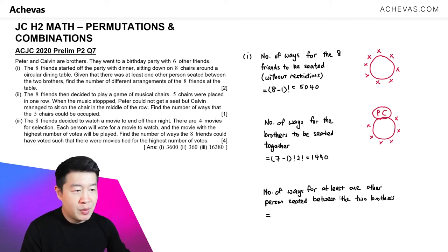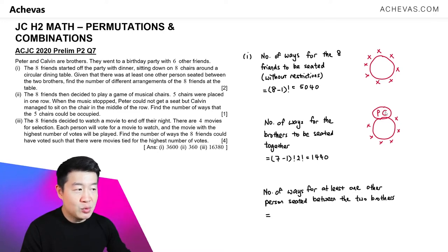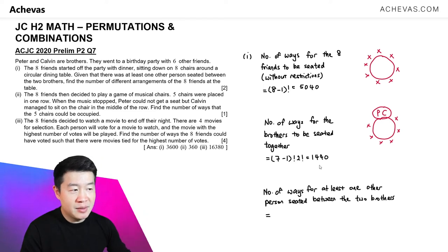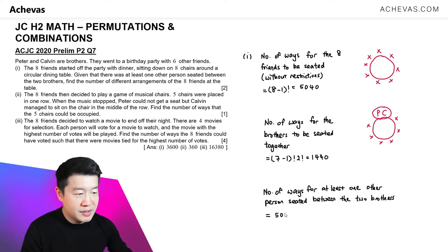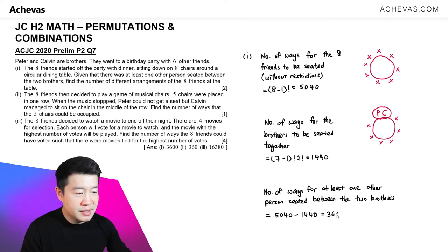So the number of ways for the question — which is to have at least one other person sitting between the two brothers Peter and Calvin — we will take the total minus the unwanted case: 5,040 minus 1,440. That will give us our answer of 3,600.